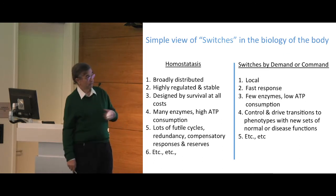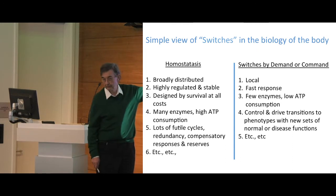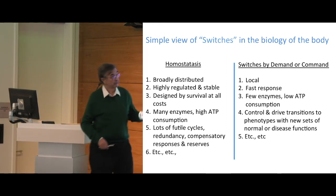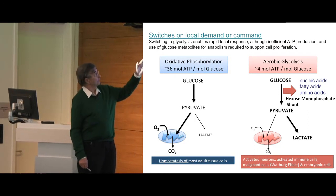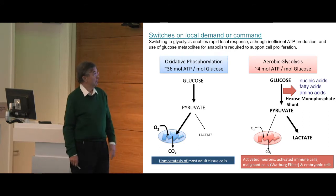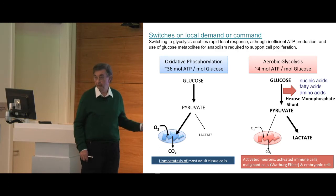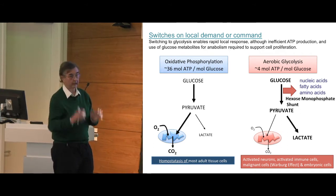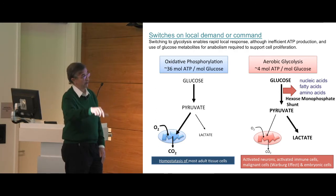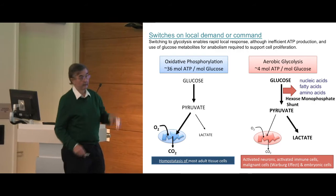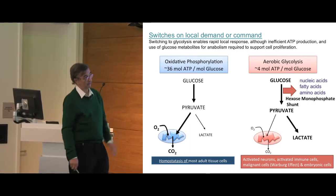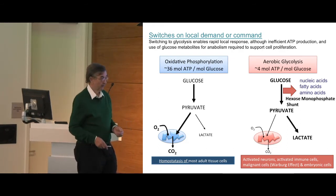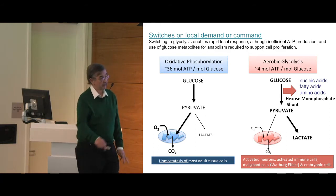At my age, most of what I know about those processes I learned in homeostasis, but it's different over in the switches. One switch you're familiar with is a switch from oxidative phosphorylation — internal combustion that burns glucose down to CO2 and water — over to aerobic, not anaerobic, but aerobic glycolysis, where now this is a minor pathway. The hexose monophosphate shunt is activated, so glucose will supply all of these, favored over just oxidative respiration. That occurs in activated neurons, activation of the immune system, malignant transformation — the famous Warburg effect — and embryonic cells.